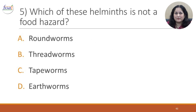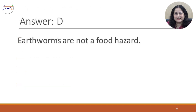Question 5: Which of these helminths is not a food hazard? A. Roundworms. B. Threadworms. C. Tapeworms. D. Earthworms. The correct answer is D, because earthworms are not a food hazard — they live in soil and do not enter our food.